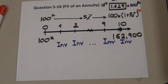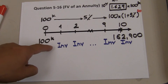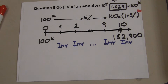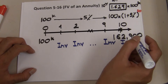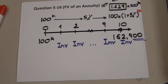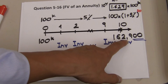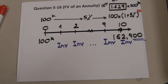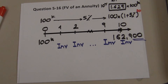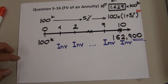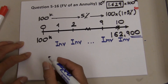That stream of investments forms an annuity. The $162,900 is the future value, so you need to find an annuity whose future value equals $162,900 at the end of 10 years. In other words, the future value of that annuity must equal this number.